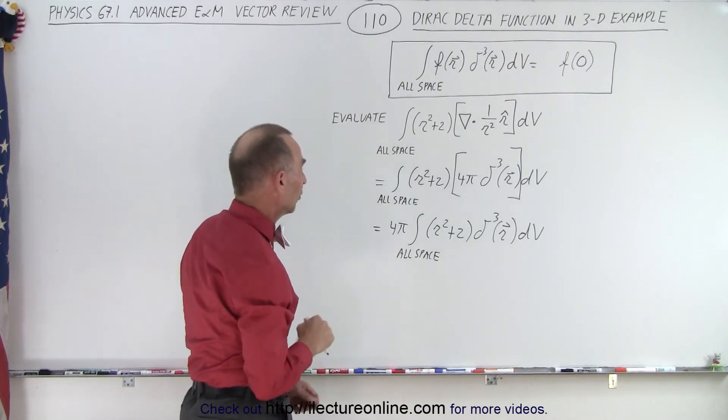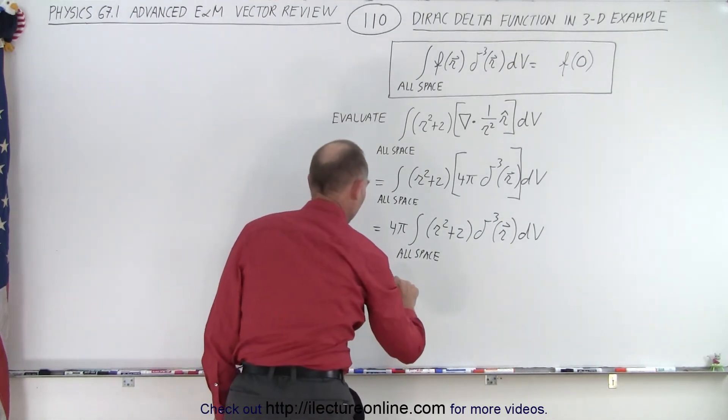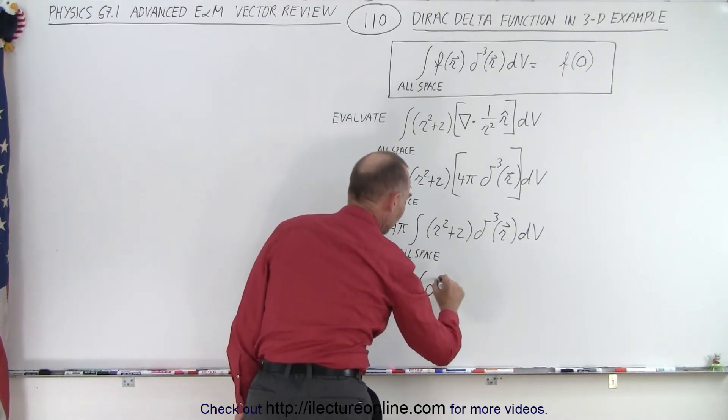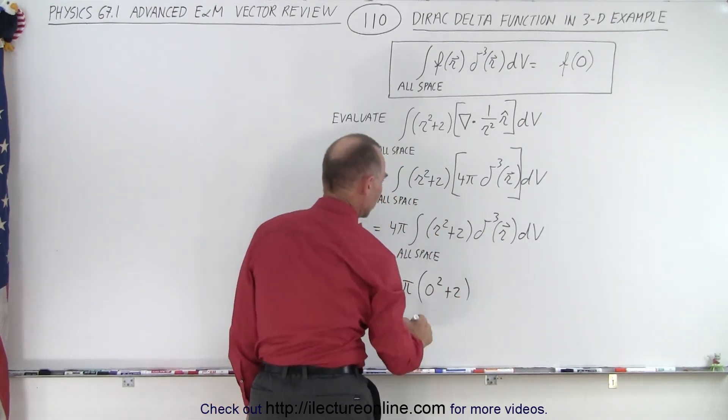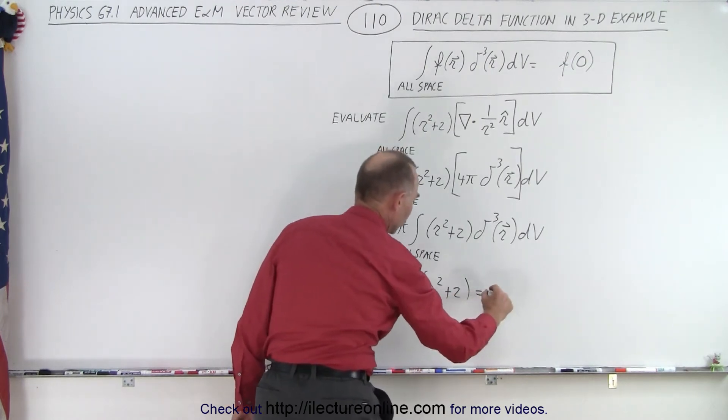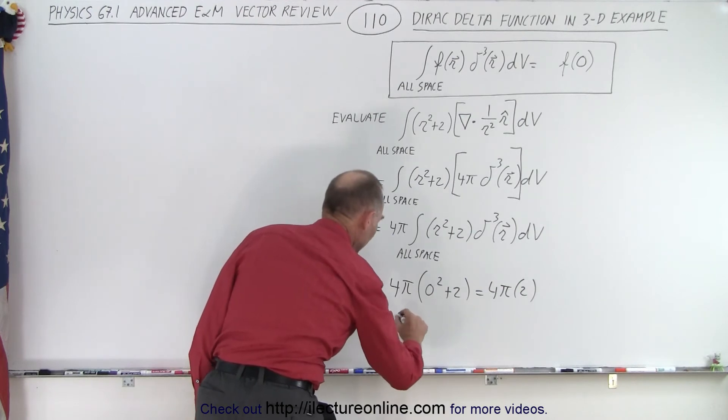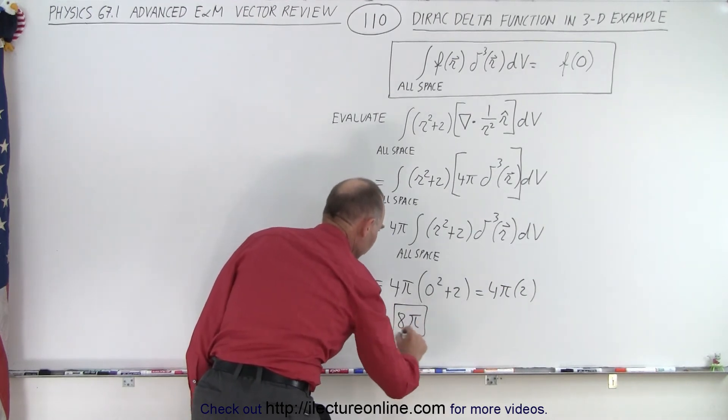With other words, when the radial direction r is equal to 0, so that means that this is equal to 4π times 0 squared plus 2, and of course that's equal to 4π times 2 which is equal to 8π.